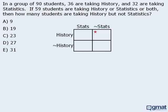Now let's add the given information to our matrix. First, we're told that there are 90 students altogether, so let's add that here. Next, we're told that 36 students are taking history. Since those two boxes are reserved for students taking history, the sum of those two boxes must be 36. If 36 of the 90 students are taking history, then the remaining 54 students are not taking history, so the sum of those two boxes must be 54.